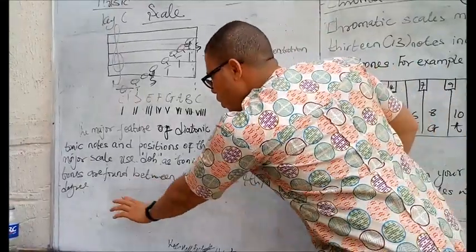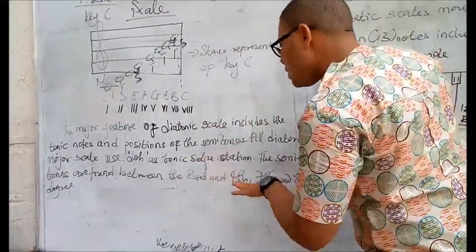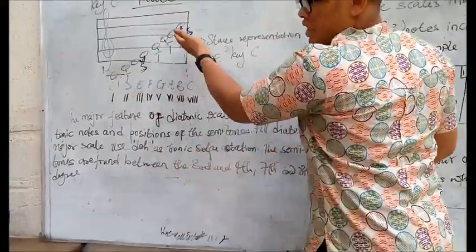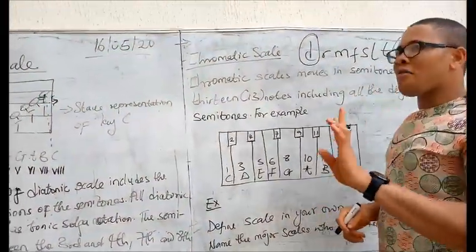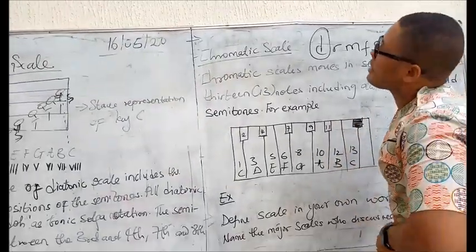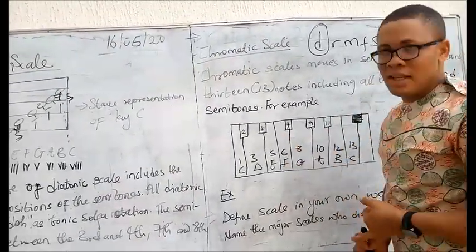The semitones are found between the 3rd and the 4th and 7th and 8th as already stated. Then the second one, remember we said we have 2 kinds: the diatonic scale and the chromatic scale.